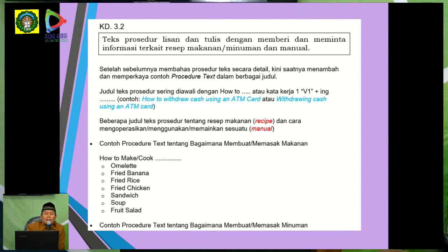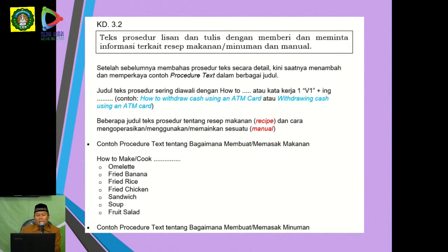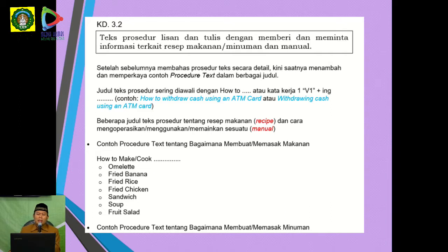KD 3.2 sudah kita baca. Judul procedure text sering diawali dengan 'how to'. Jadi untuk memperhatikan judulnya, anak-anak bisa mengetahui ini teks jenis apa. Procedure text biasa diawali dengan 'how to', atau diawali dengan kata kerja -ing. Contoh: 'How to withdraw cash using an ATM card' — bagaimana menarik uang cash menggunakan kartu ATM. Atau diawali dengan kata kerja -ing: 'withdrawing' — langsung menggunakan kata kerja bentuk -ing.